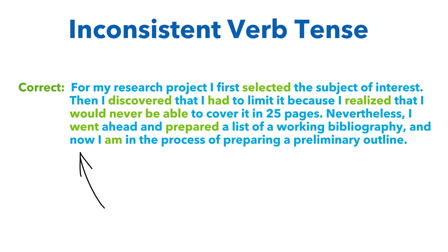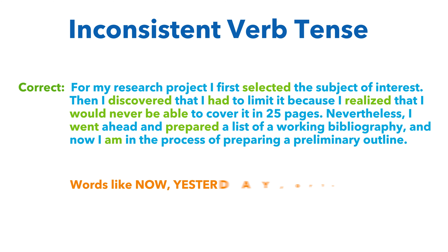If you are going to make a shift in verb tenses, there must be a distinct reason for doing so. Words that indicate time are the clearest way to signal that shift — words like 'now' for the present, 'yesterday' for the past, or 'tomorrow' for the future. You should decide on the tense you want to use for your paper and stick to it unless you have a very clear reason for switching.